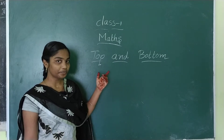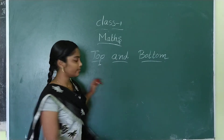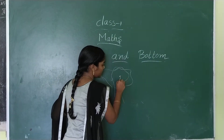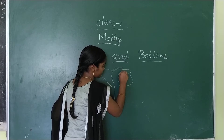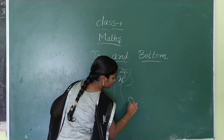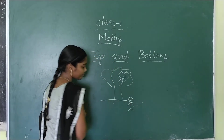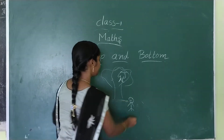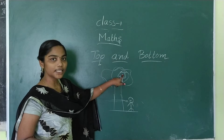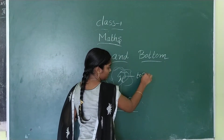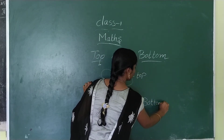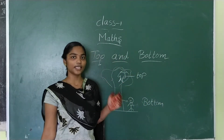I already explained: if there is a tree, here is one bird, and here is one boy. So in this picture, the bird is at the top of the tree, and the boy is at the bottom of the tree. We already discussed this in previous classes.